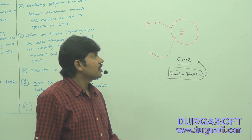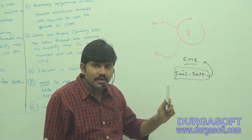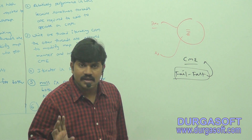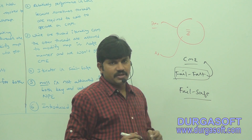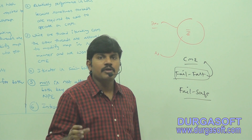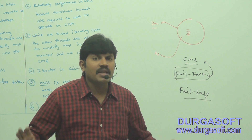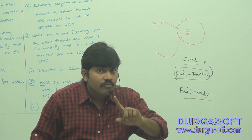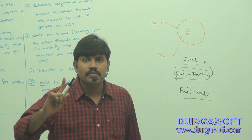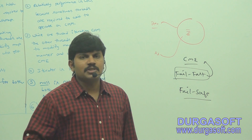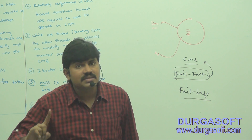In the case of ConcurrentHashMap, while one thread is iterating, the remaining threads are allowed to add or modify the map object without raising a ConcurrentModificationException. Such iterators are called fail-safe iterators. This is a separate topic but the basic idea — what is a fail-safe versus fail-fast iterator — is very important for the interview room.